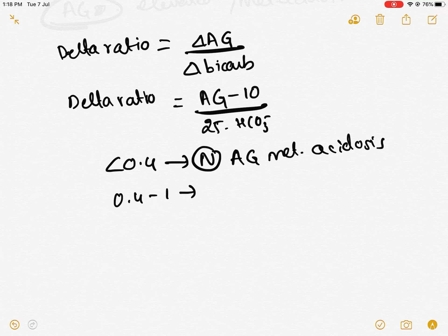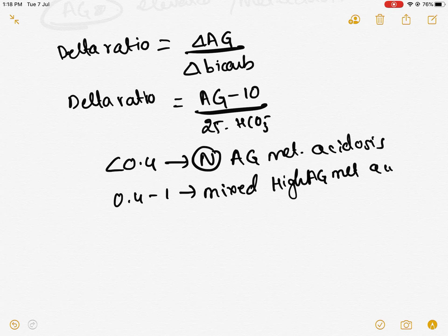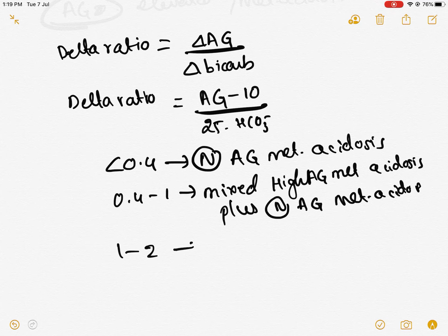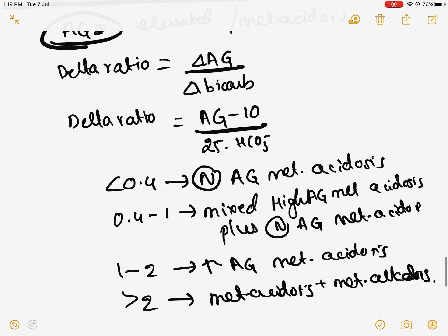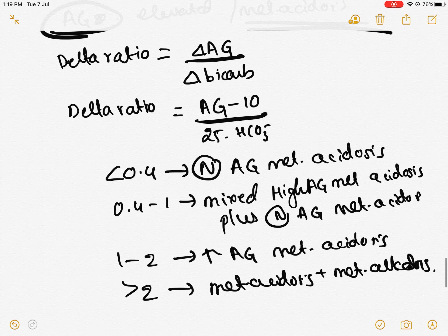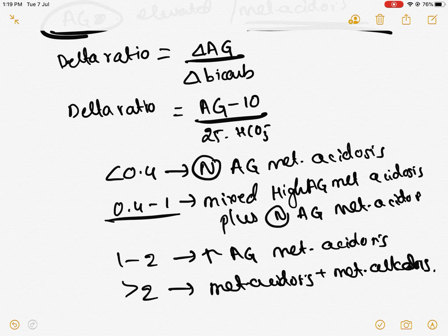If delta ratio is 0.4 to 1, it indicates mixed — that is high anion gap metabolic acidosis plus normal anion gap metabolic acidosis. If it is 1 to 2, it indicates pure high anion gap metabolic acidosis. If it is more than 2, it indicates high anion gap metabolic acidosis plus metabolic alkalosis. So delta ratio is calculated when there is metabolic acidosis to identify the specific type or mixed disorder.